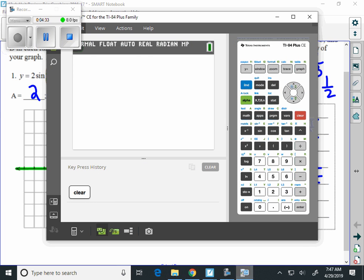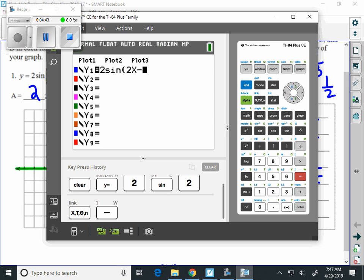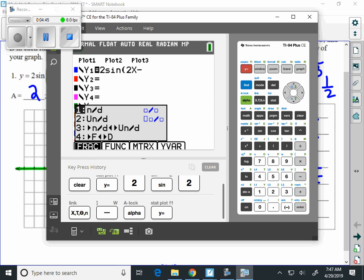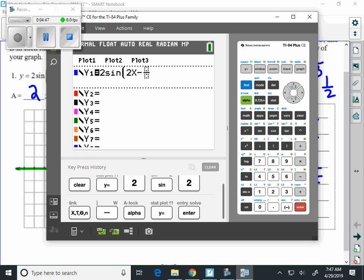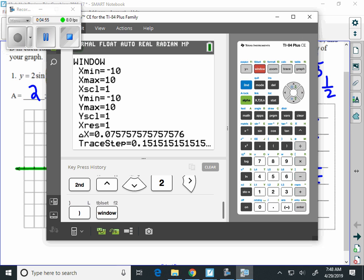We go over to our graph and we go to the y equals. And we type in our function. y equals 2 sine of 2x minus pi divided by 2. And then let's in our window go from 0 and I'm going to go to 5 pi over 4.